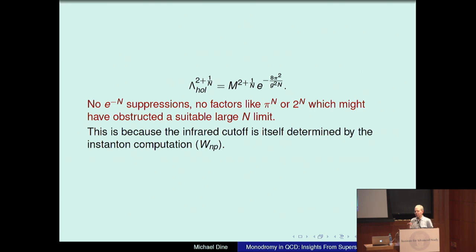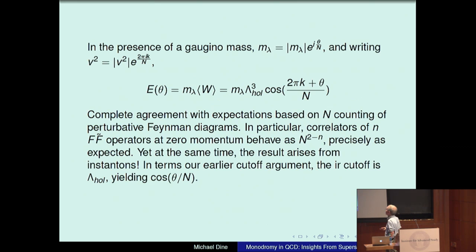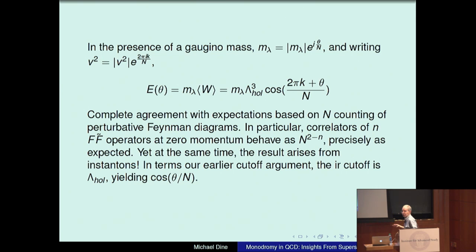The form of W determines V, which acts as the cutoff. Adding a gaugino mass to perturb the system, we get an E(theta) which behaves like lambda-holomorphic cubed — again like N squared — times cosine of 2 pi k plus theta over N, in complete agreement with expectations based on N-counting of perturbative Feynman diagrams. In particular, correlators of N F-F-dual operators at zero momentum still behave as N to the 2 minus N, precisely as expected. But at the same time the result arises from instantons — the infrared cutoff is lambda-holomorphic, yielding cosine theta over N.